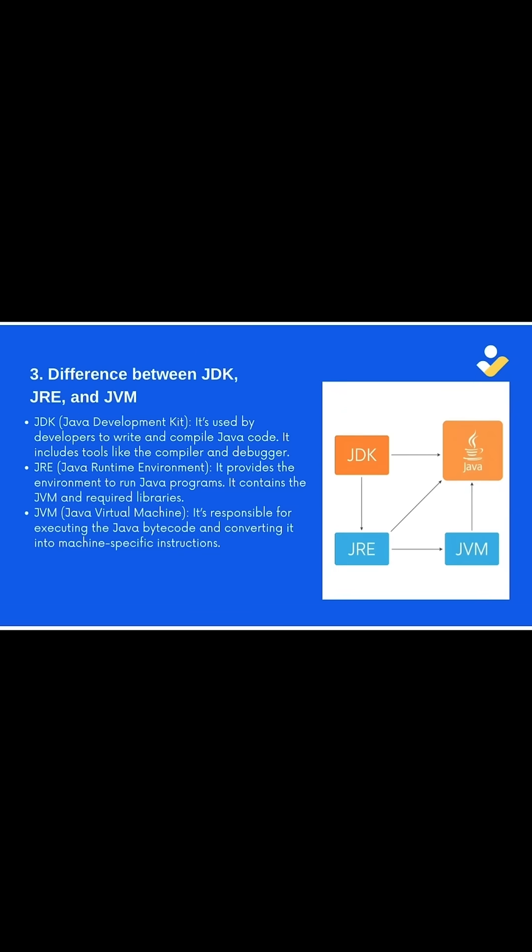JVM, or Java Virtual Machine, is responsible for executing Java bytecode and converting it into machine-specific instructions. In simple words: JDK is for development, JRE is for running the code, and JVM is the engine that actually executes it.